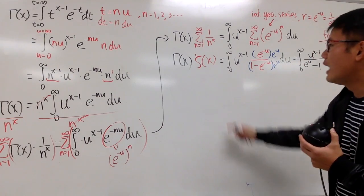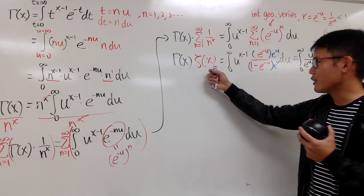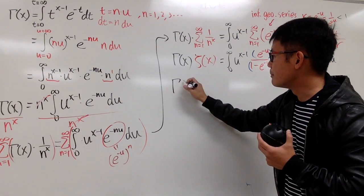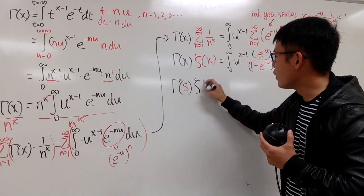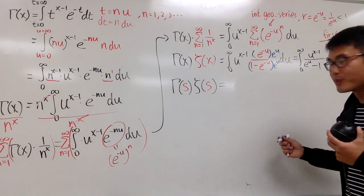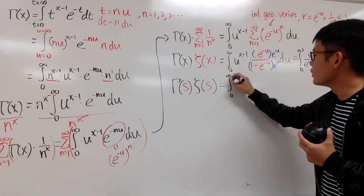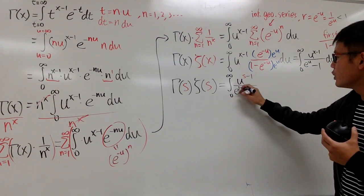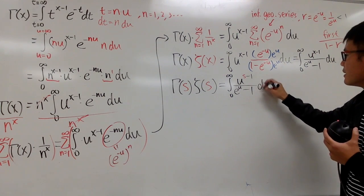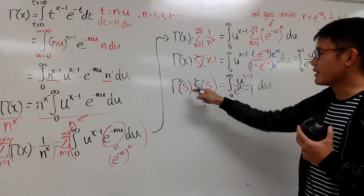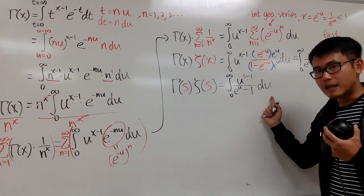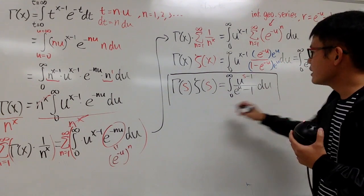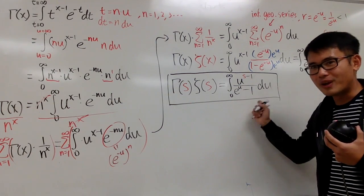I want to replace all the x's by s, because whenever we talk about the theta function we should have s as the input. So finally: gamma of s times theta of s equals the integral from 0 to infinity of u to the s minus 1 over e to the u minus 1, du. Here u is just a dummy variable — you can change it to t, x, or whatever you want. This is a really nice connection.